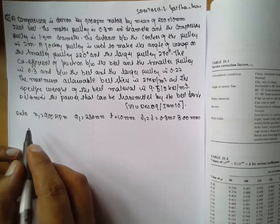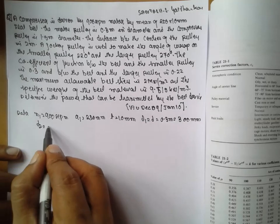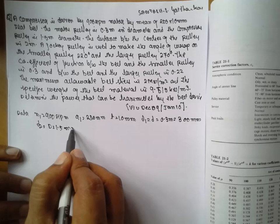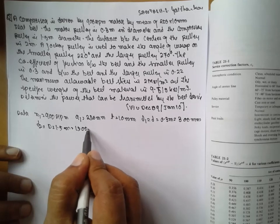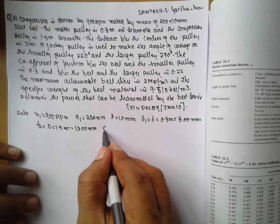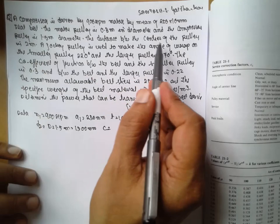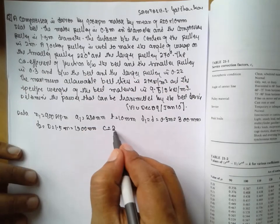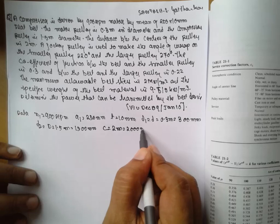Next one, D2. D2 is equal to 1.5 meters. You have to write it as 1500 mm. Center distance is given. Center distance is 2 meters, which is 2000 mm in terms of mm.